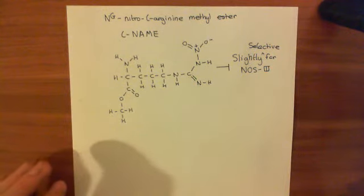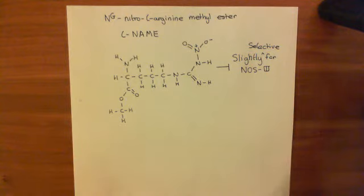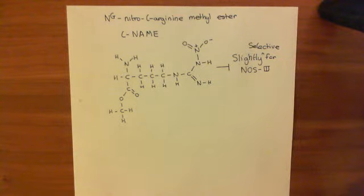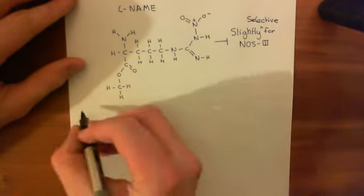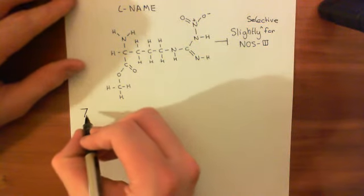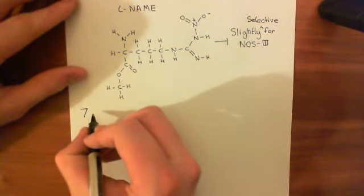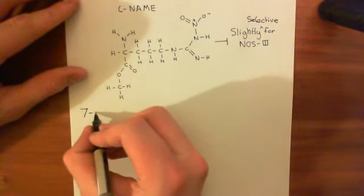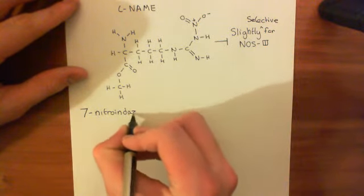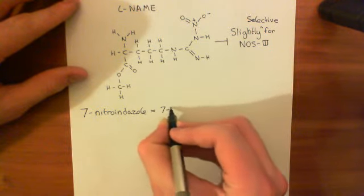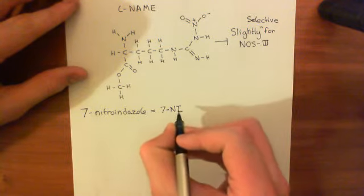Now we can move on to some more selective variants, because L-NMMA, L-nitro-arginine, and L-NAME are really the non-selective NOS inhibitors. Now we're going to move on to a selective NOS inhibitor, and this one has an interesting story because it's not selective because the chemical will actually only bind to that enzyme. Instead, it's selective because it's selectively taken up into neurons. And this is 7-nitroindazole, often abbreviated to 7-NI.